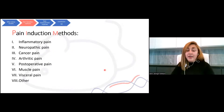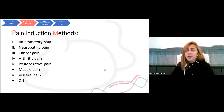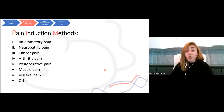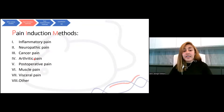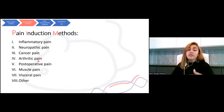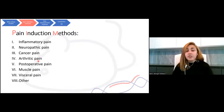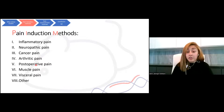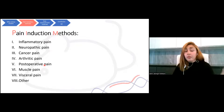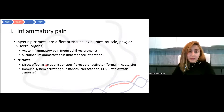The pain induction methods we are going to see today come from different pain types: inflammatory, neuropathic, cancer, arthritic, post-operative, muscle, and visceral pain. There are some other models, for example diabetic neuropathy, alcoholism, and HIV-related neuropathy, which have models but we are not going to cover them today.